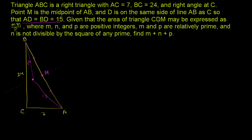Given that the area of triangle CDM may be expressed as M times the square root of N over P, where M, N, and P are positive integers, M and P are relatively prime, and N is not divisible by the square of any prime — meaning the radical is fully simplified — we need to find M plus N plus P. So we essentially need to find the area of triangle CDM.